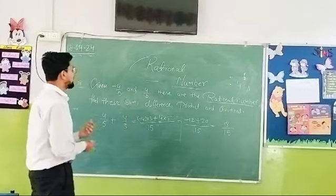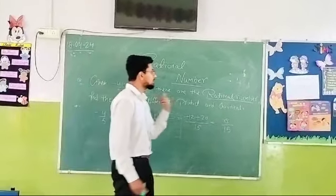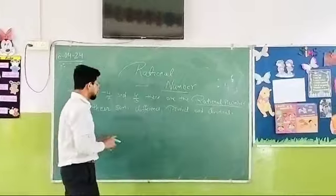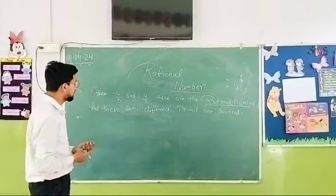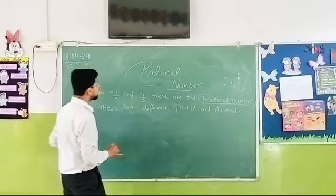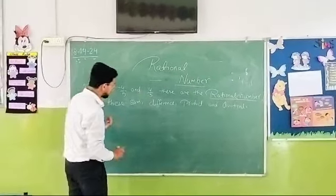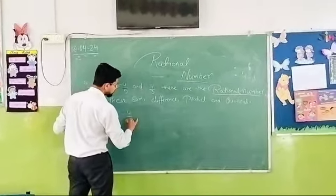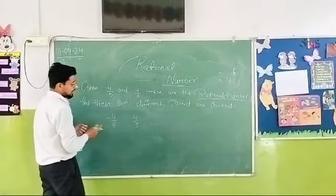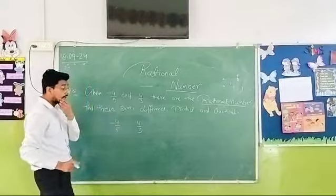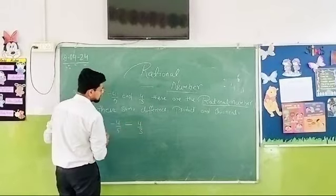Now, we will do the difference and then product and then quotient. So students, now we will do the difference. We will see here how can we subtract these two rational numbers. Now, I will write minus 4 upon 5 again and 4 upon 3 and the operation, now I will write it like minus. We have to subtract.